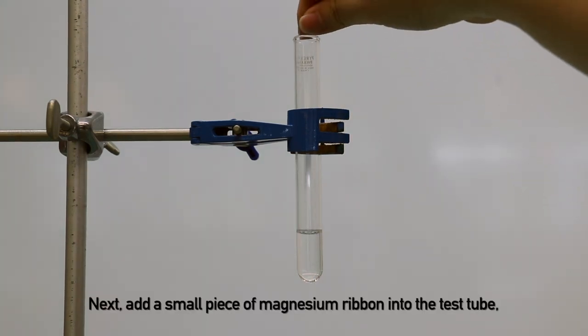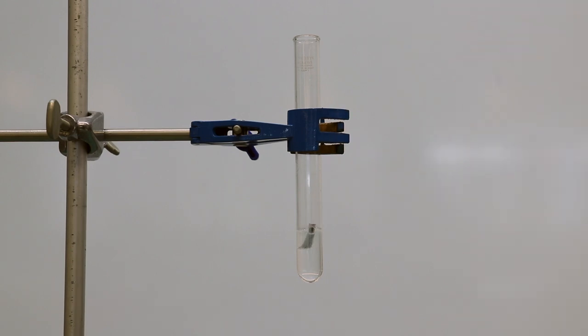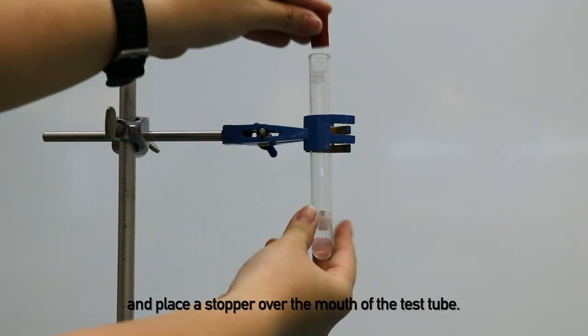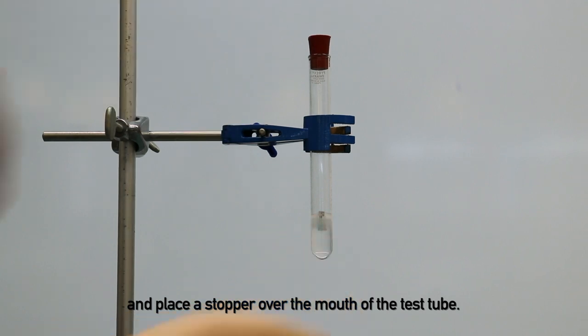Next, add a small piece of magnesium ribbon into the test tube and place a stopper over the mouth of the test tube.